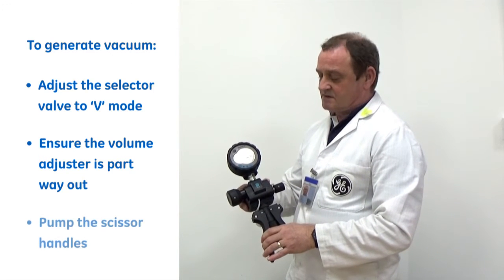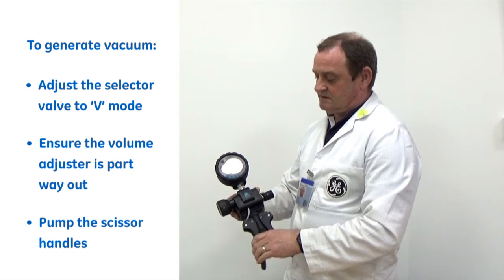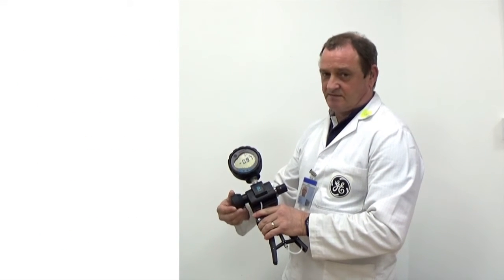It's then simply a case of squeezing together the scissor handles to generate a vacuum. Small adjustments can be made then using the volume adjuster.